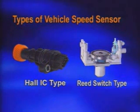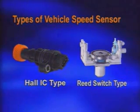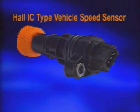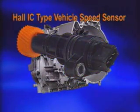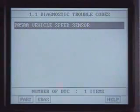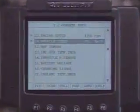There are Hall IC type and reed switch types in the vehicle speed sensor. The Hall IC type vehicle speed sensor is located on the differential gear housing. It monitors the output speed of the transaxle and can be checked by the fault code and current data.